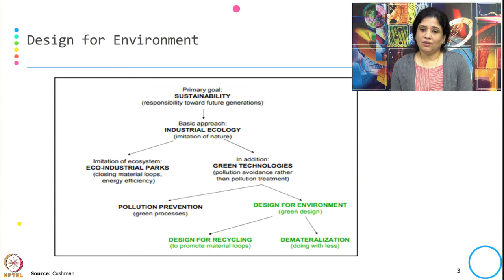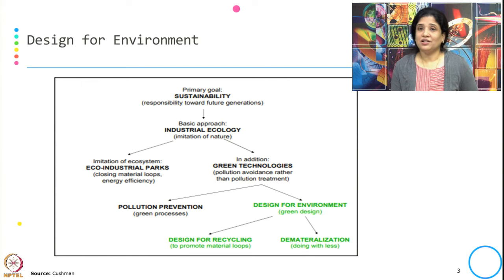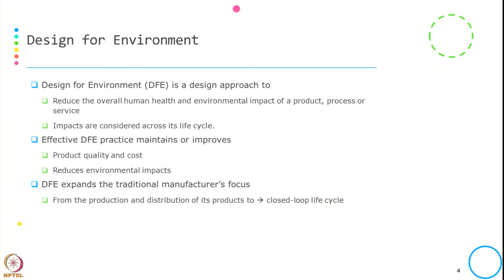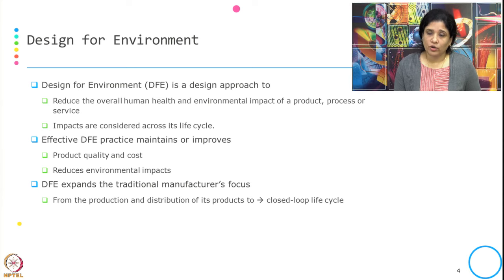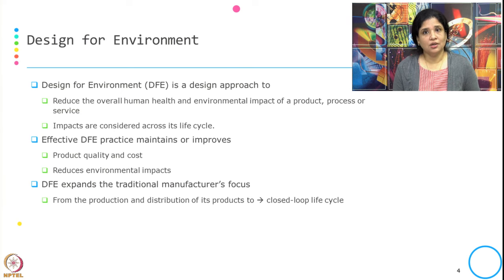Design for Environment is again of two types. One, we do product design — we incorporate design in such a way that there is a place for recycling to promote closed material loops. The second one is dematerialization, which is typically about doing with less — how we can design the product so we have to use less of the resources. So Design for Environment is a design approach used to reduce the overall human health and environmental impact of a product, process, or service.